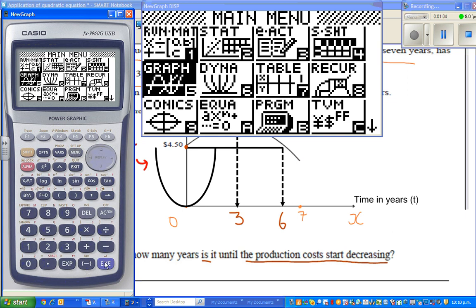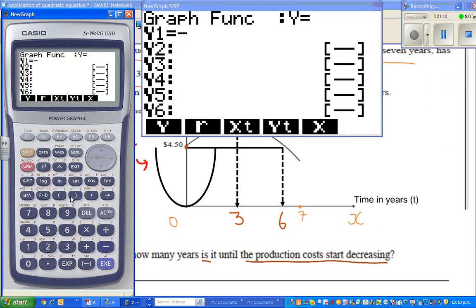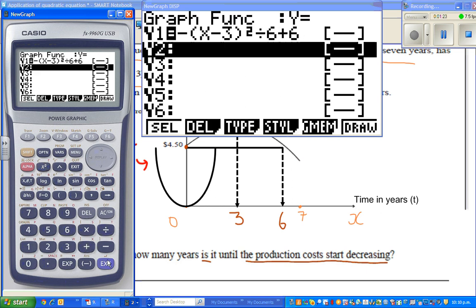So go to graph and execute. And type in minus bracket X minus 3 squared divided by 6 plus 6. And let's see what happens. Let us draw the graph.